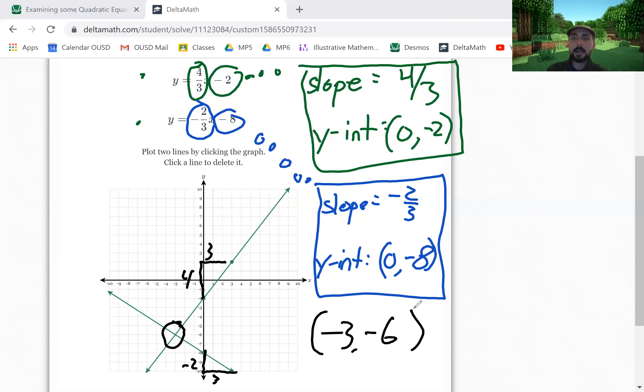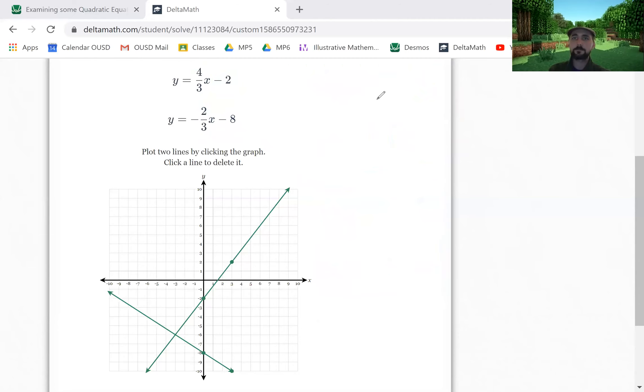So this intersection is at negative 3 comma negative 6, and that is the answer to the problem. Now to actually do this, I'm going to have to scroll down, which means I'm going to have to delete the annotations. I'm going to delete the annotations, but when you're watching this as the video, you can pause it and write down and record whatever you need.